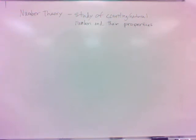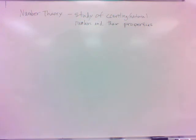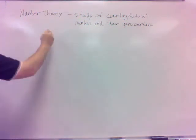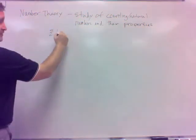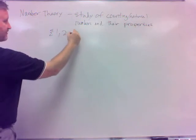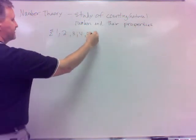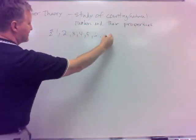The good thing about number theory is it's a very limited set that you talk about, because if I'm only talking about the natural numbers, the counting numbers — 1, 2, 3, 4, 5, 6, 7, 8, 9, etc.